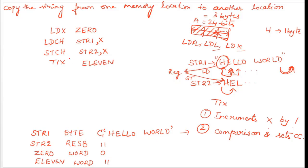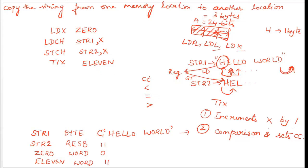We write TIX 11. Initially X was 0; after TIX it is incremented to 1 and compared with 11. The condition code can take three values: less than, equal to, or greater than. If X is less than 11 this is set; if X equals 11 this is set; if X is greater than 11 this is set.